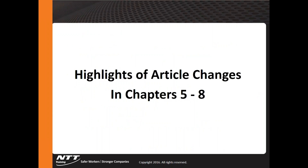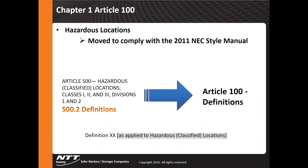Now let's look at highlights of changes within existing articles. In Article 500, all 14 hazardous location definitions have been moved from Article 500 and relocated to Article 100 at the beginning of the code. You're going to find deleted sections in 500.2, 501, 502, and 503. The definitions are still there — you'll just have to go back to Article 100 to find them instead of within the hazardous location articles themselves.